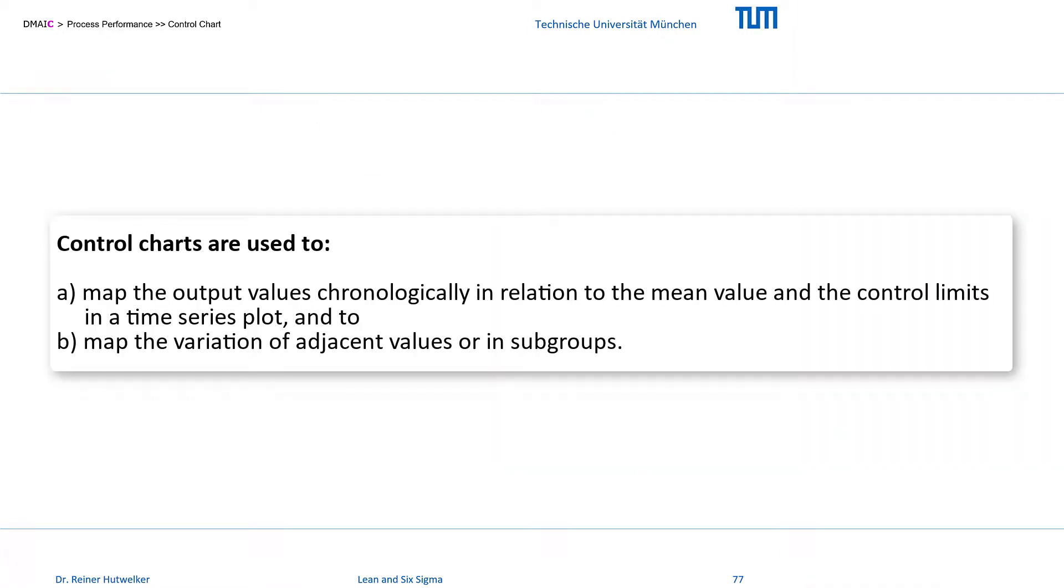Control charts are used to map the output values chronologically in relation to the mean value and the control limits in a time-series plot, and to map the variation of adjacent values or in subgroups.